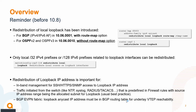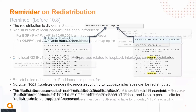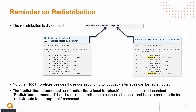This is why loopback redistribution for inbound management is important. For a BGP VPN fabric, the loopback anycast IP must be present in the routing table for VTEP reachability. The command for redistributing loopback addresses is divided into components — first you have the local designation.